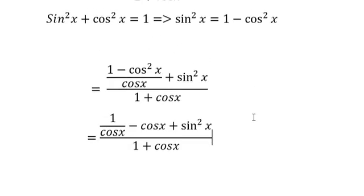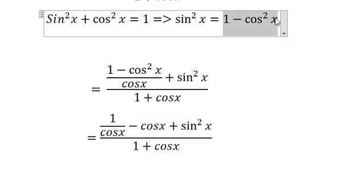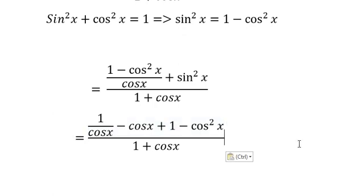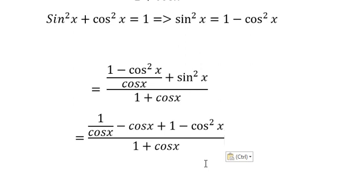Now we will have the next step to convert everything. This sine x squared, you convert to 1 minus cosine squared. Here is about the final answer. The next step, you can simplify everything, and this is very simple.